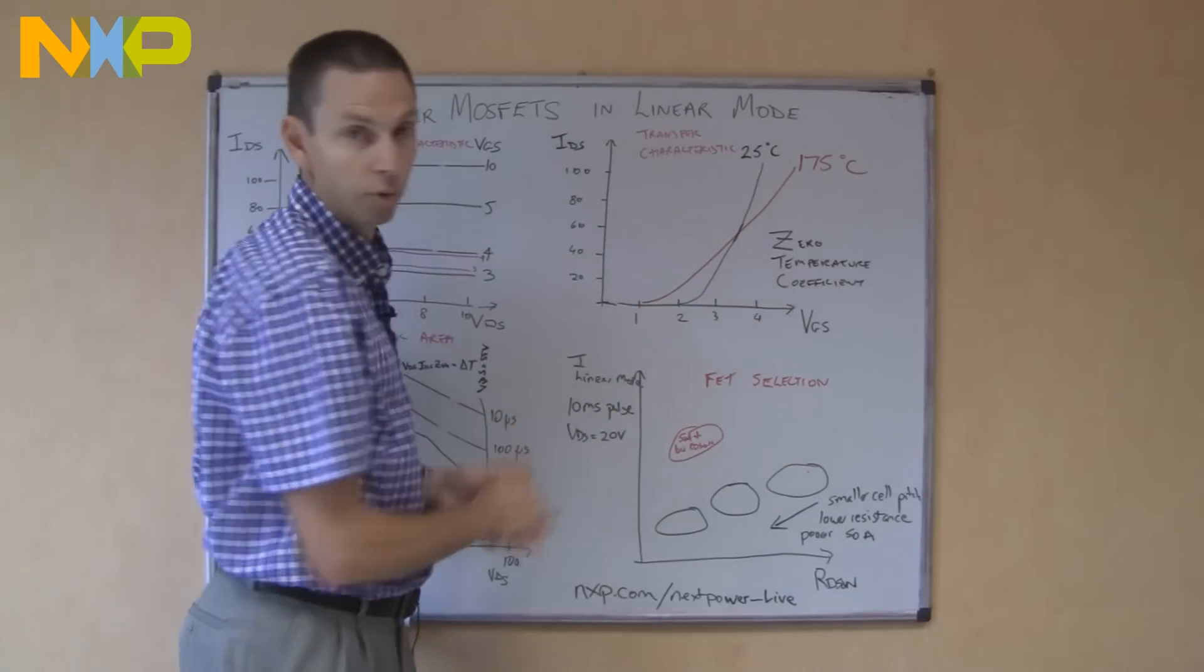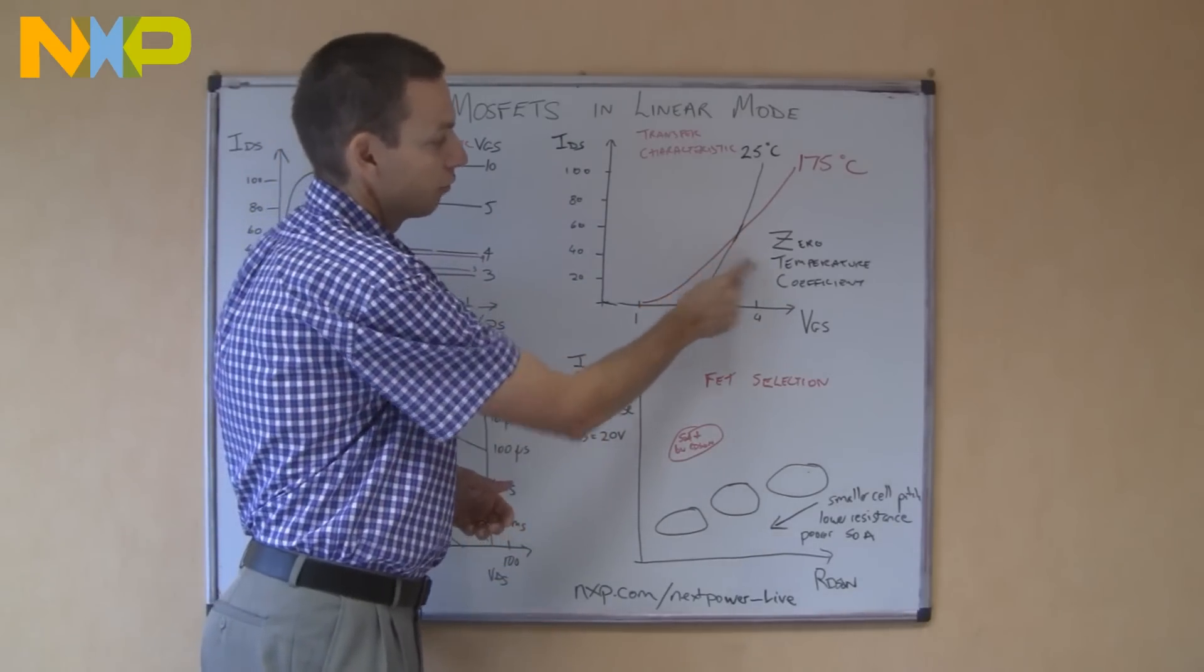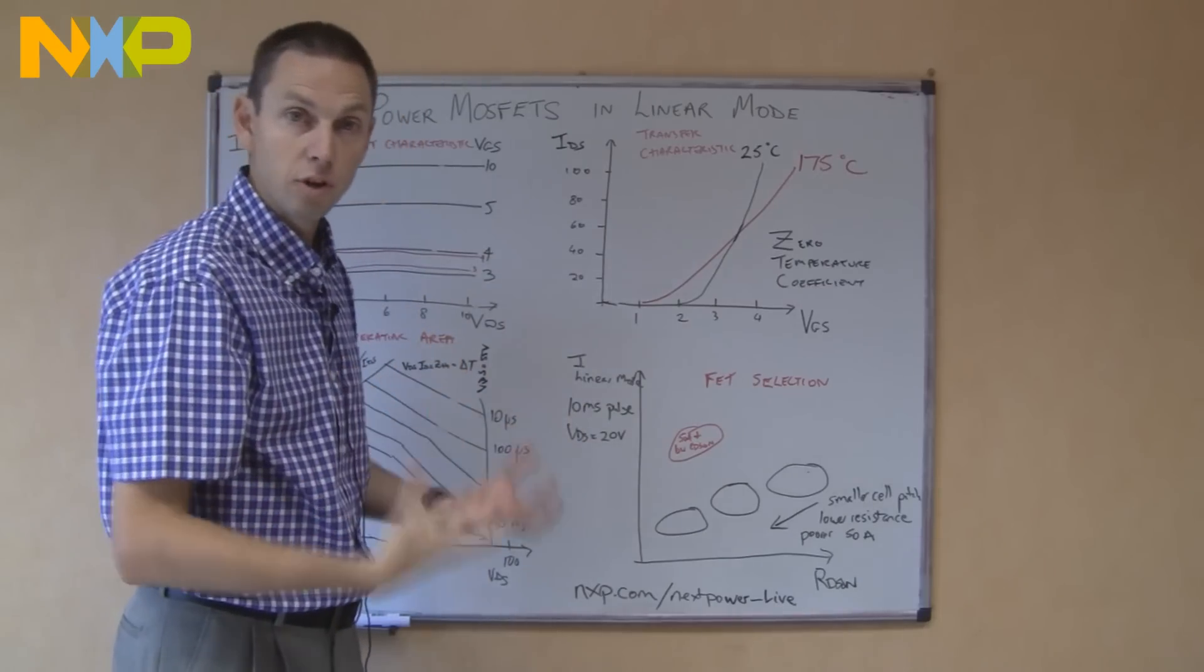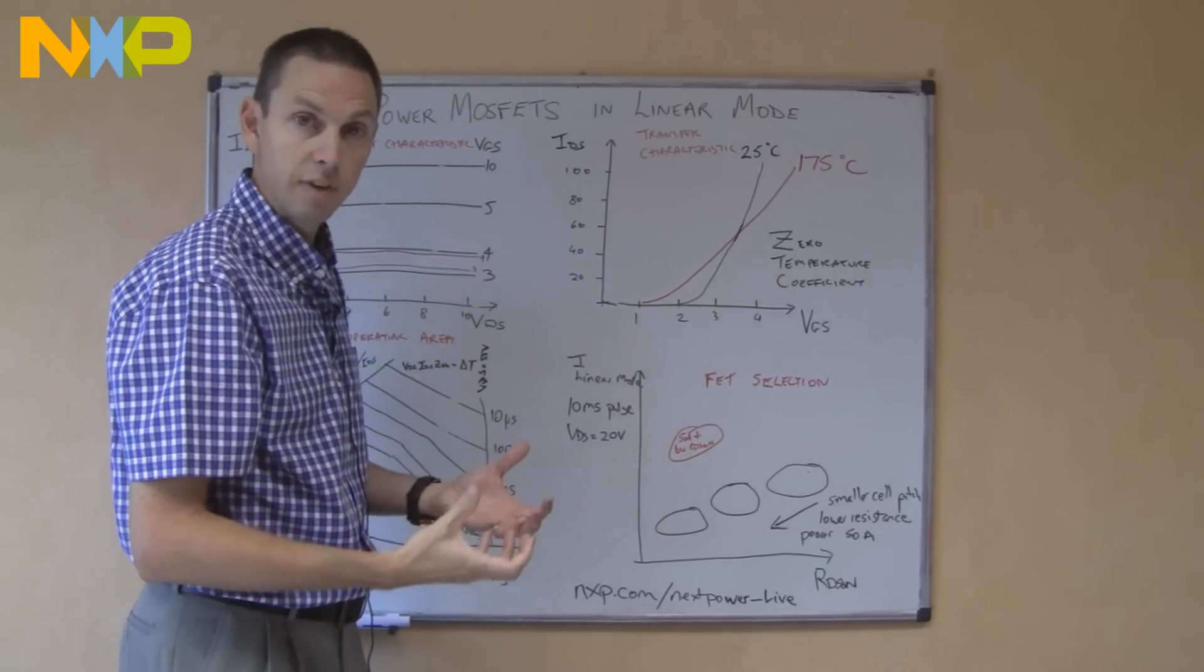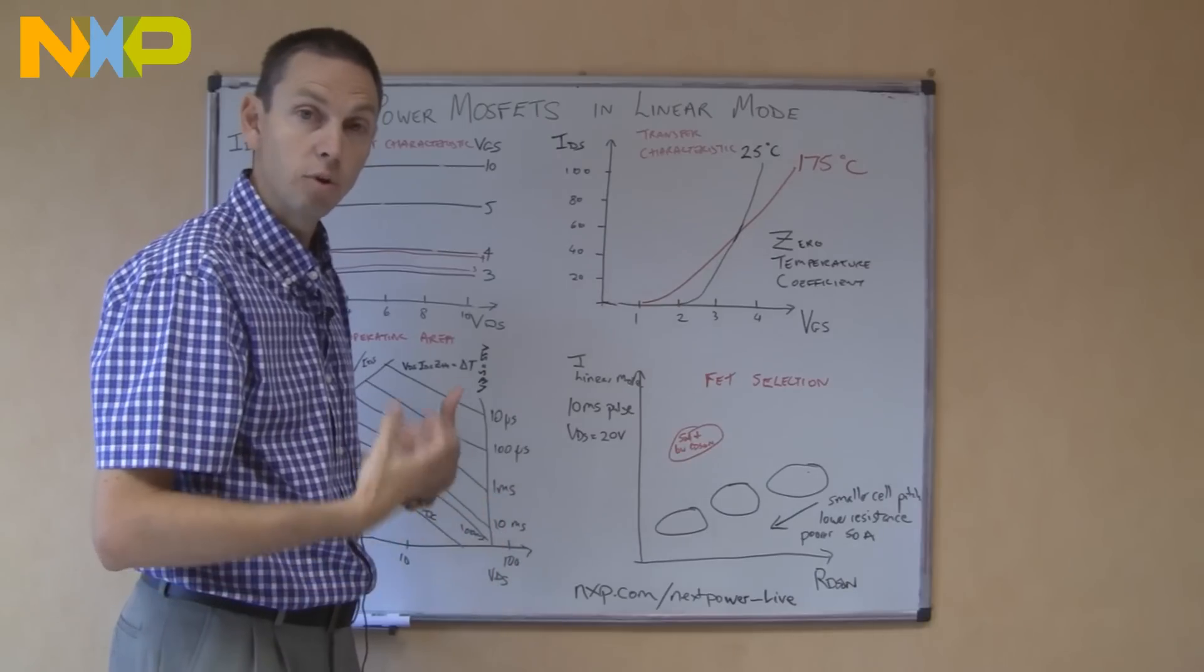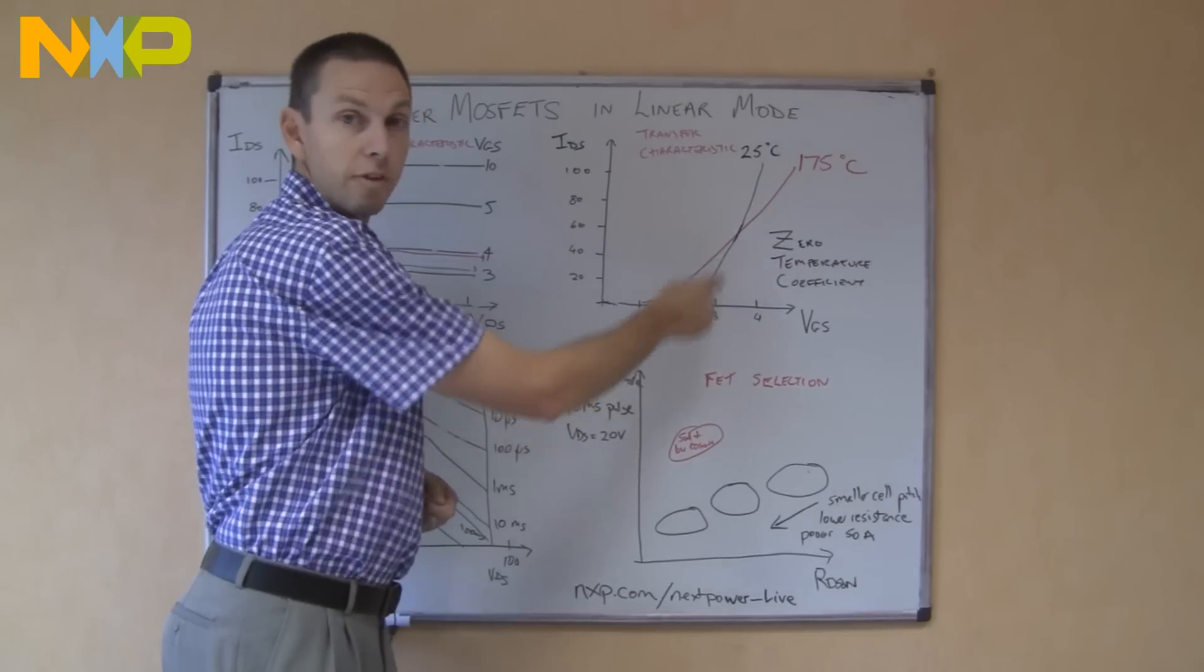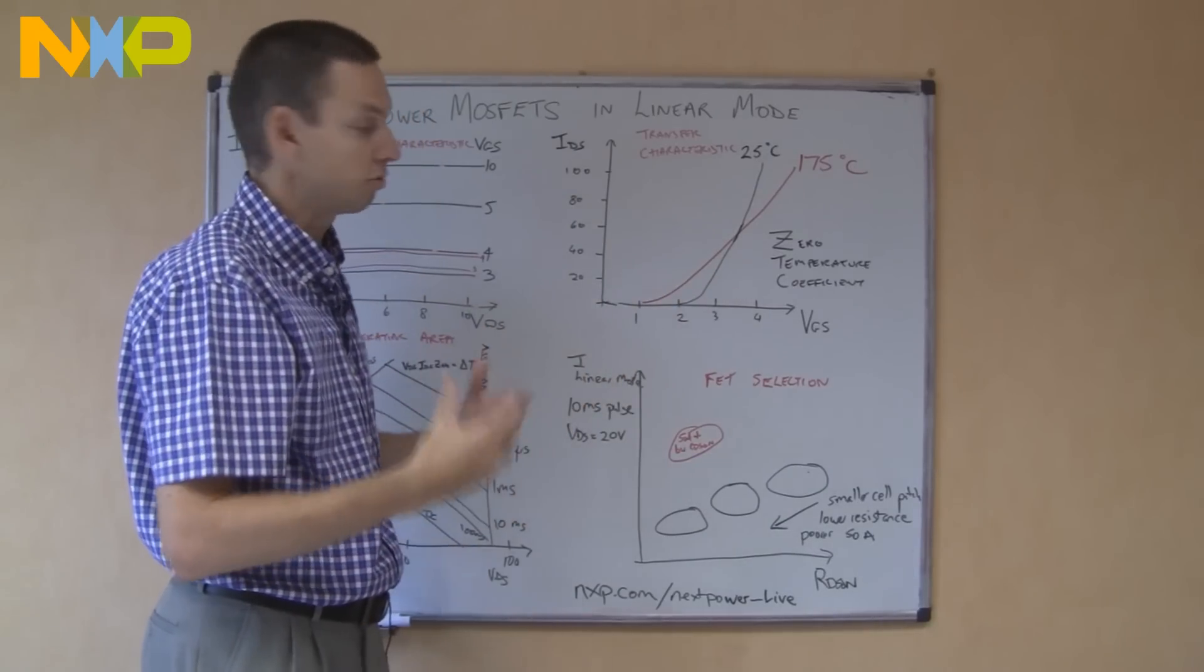If you're operating below this point, it's called the zero temperature coefficient point, where there's no change of temperature. If you're operating below this point, as the MOSFET operates, it'll get hotter. If it gets hotter, more current will flow. If more current flows, more power is dissipated, then the MOSFET will get even hotter. So in this situation, we're in a very unstable situation, we can get some thermal runaway.